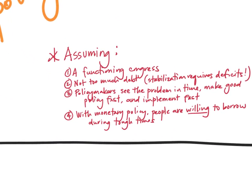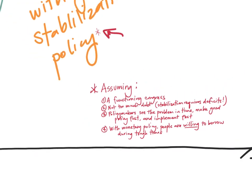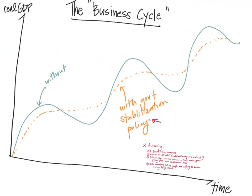This assumes a functioning Congress, not too much debt — because stabilization requires deficits if you're using fiscal policy — policymakers who see the problem in time, make good policy fast, and implement it fast. And if it's monetary policy, it assumes that people are willing to borrow during tough times: you can lower the interest rate, but you can't force people to borrow. That's a lot to ask. We are learning a little bit more about the macroeconomy every year, so that's a good thing.